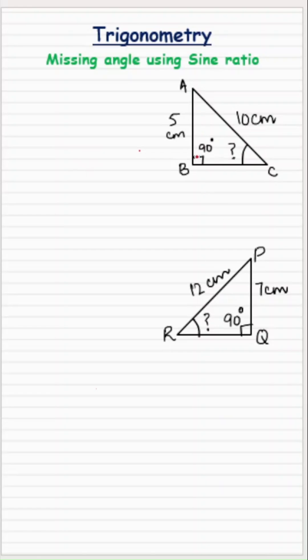Hey everyone, let's find the missing angle when the two sides of the right angle triangle are already known to us.